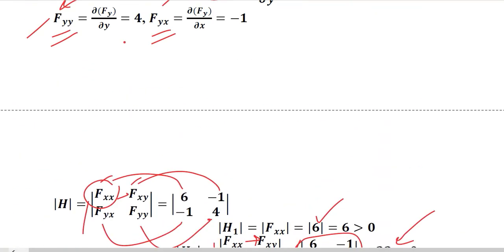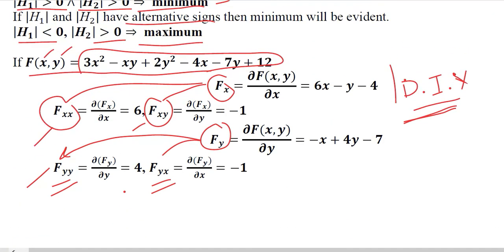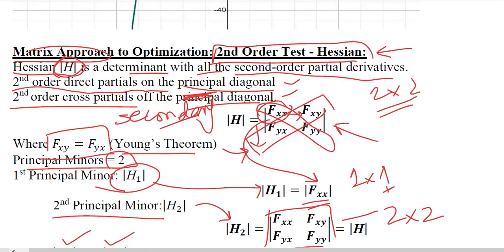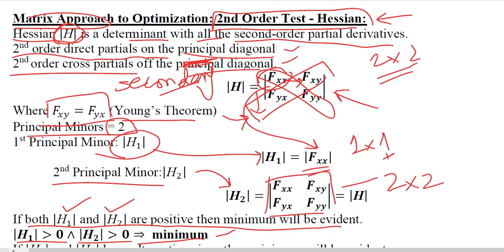This is how we apply the Hessian determinant to any second-order situation where we are trying to be sure if we are at a maximum or at a minimum. This is the matrix approach to optimization in addition to the calculus approach that we have already understood. Thank you.